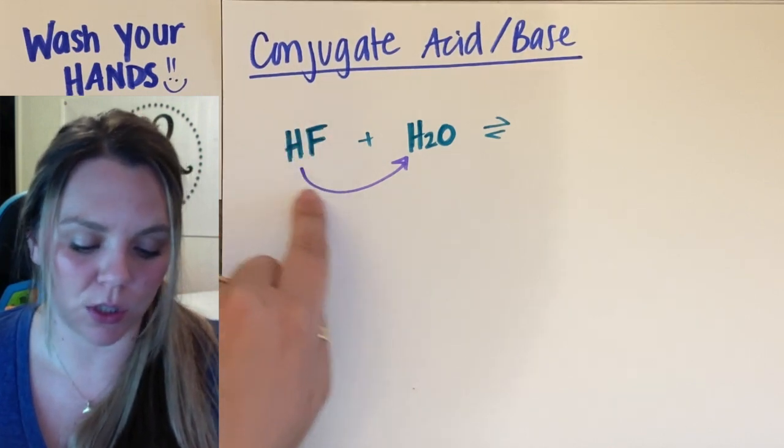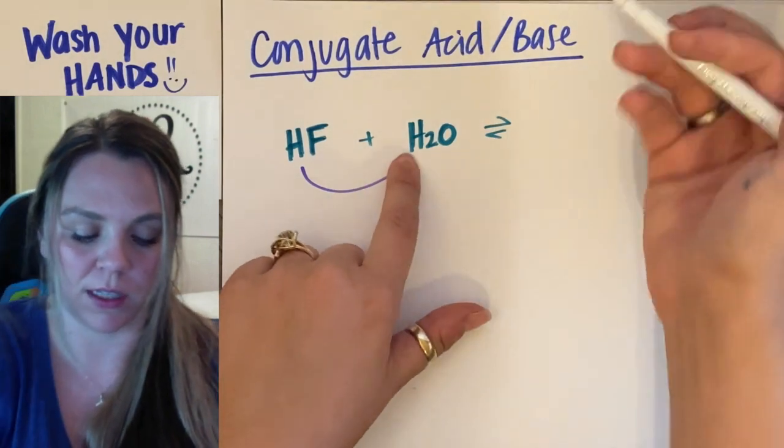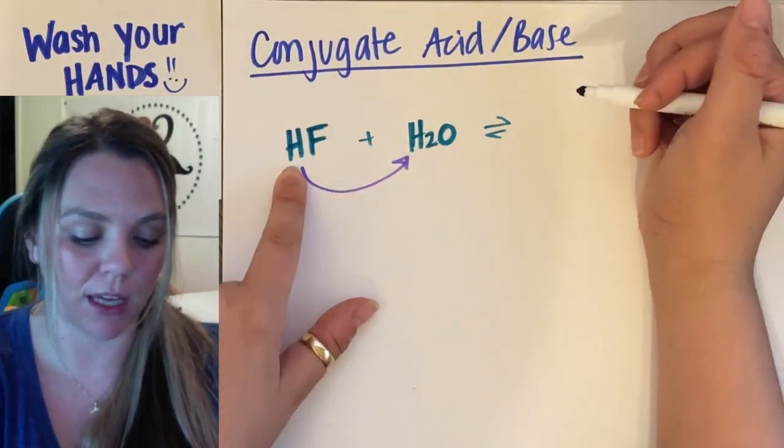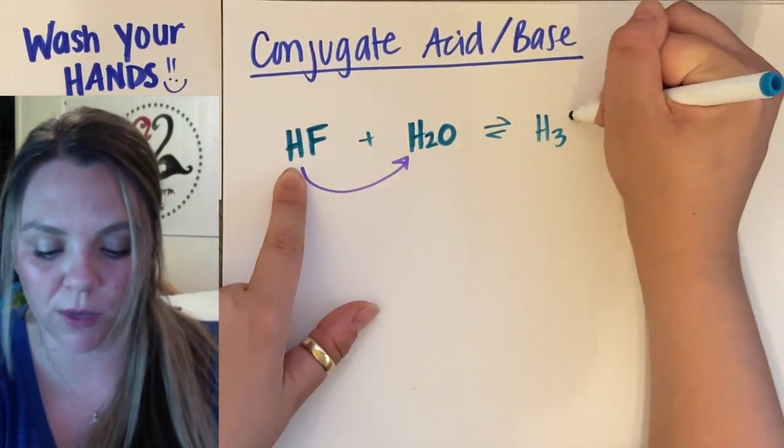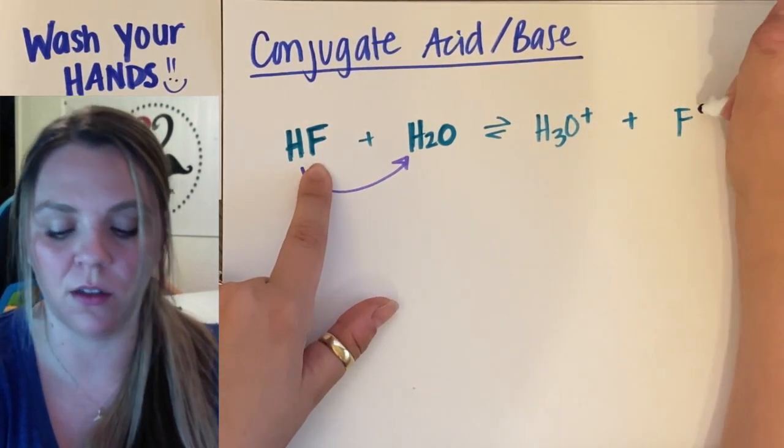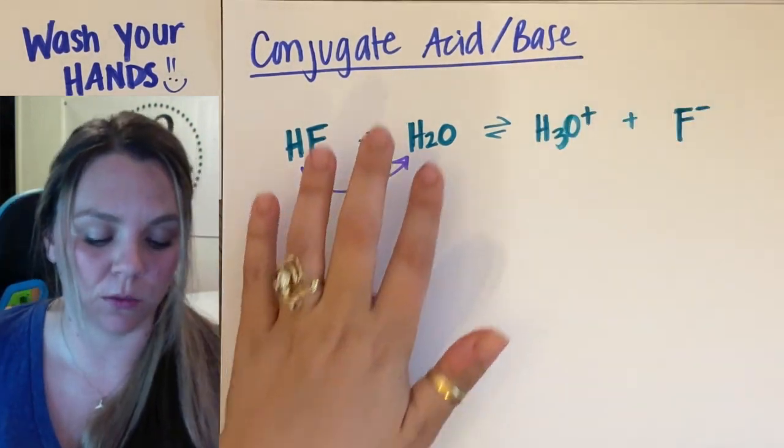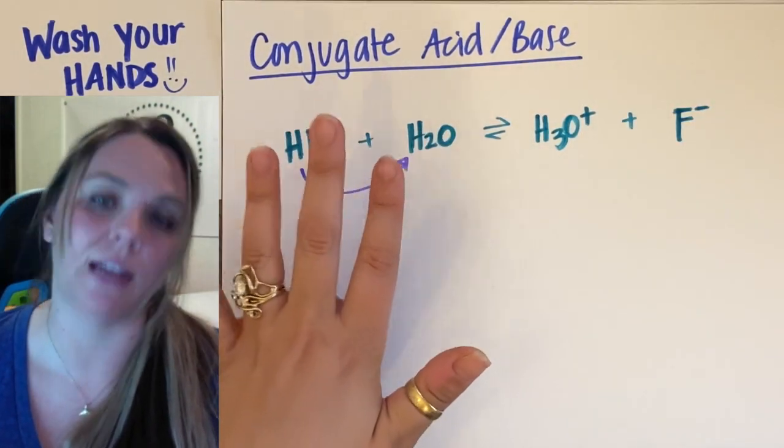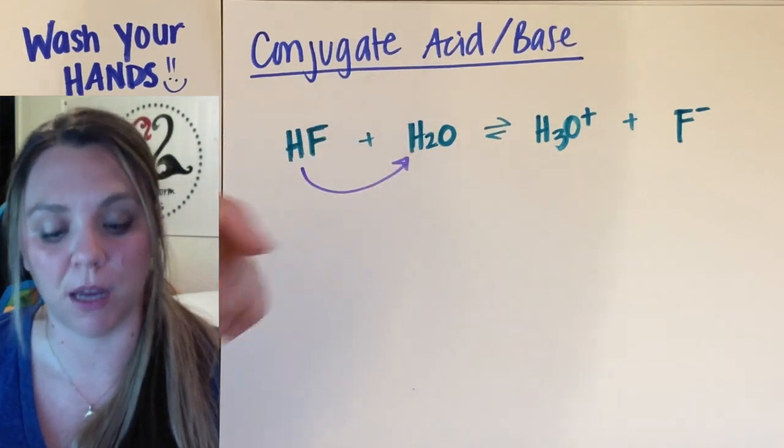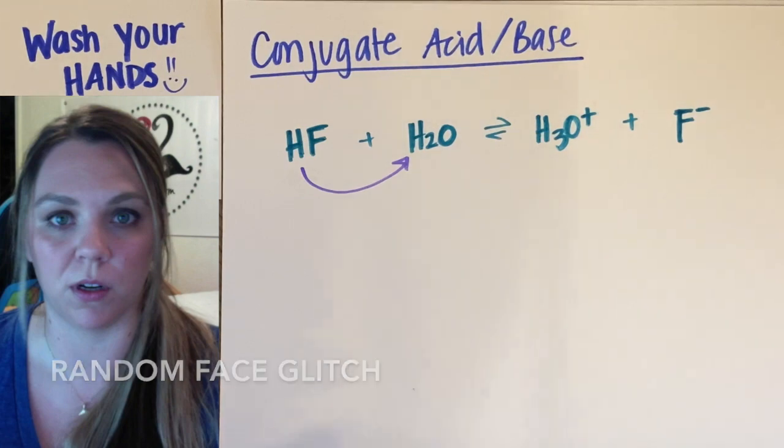So this guy is going to donate a hydrogen here, which means I'm going to form, instead of H2O, I now have H3O+, and I have my fluorine with a minus charge. I have my fluoride ion now. It's really easy to identify what's the acid and what's the base on my forward reaction. Going forward, it's easy.